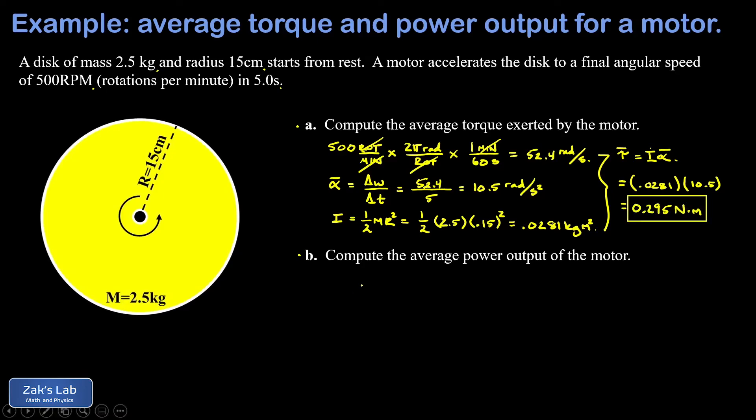So all we're doing here is looking at how much energy ended up in the disc, how long did it take to get there, and then the rate of energy transfer is what we mean by power. So we're going to compute the rotational kinetic energy of the disc in its final state.